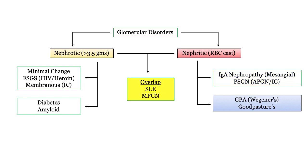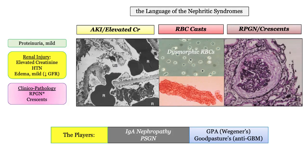The overlap syndromes include lupus nephritis and membranoproliferative glomerulonephritis, which will be covered in our next recording. So with this broad but important overview, we can proceed.